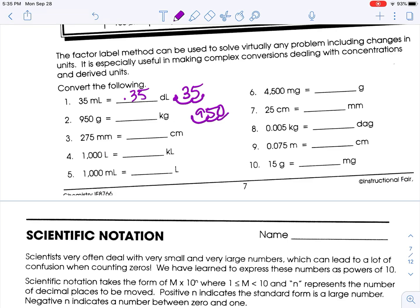One, two, three. 0.95. Why didn't I write 0.950? Oh, this has two sig figs. I should also have two sig figs.